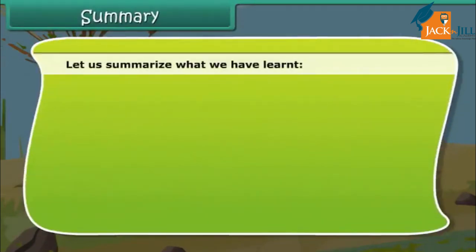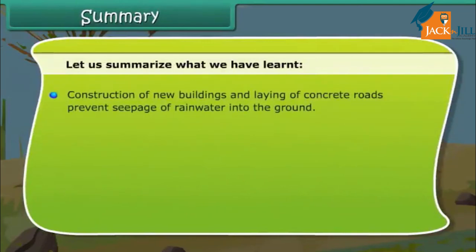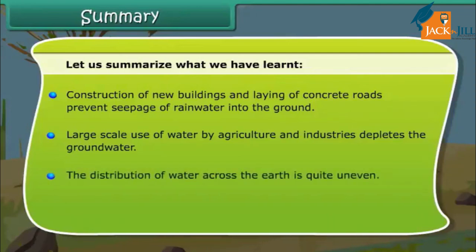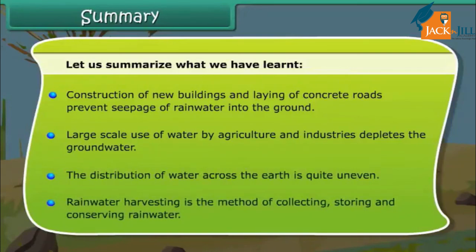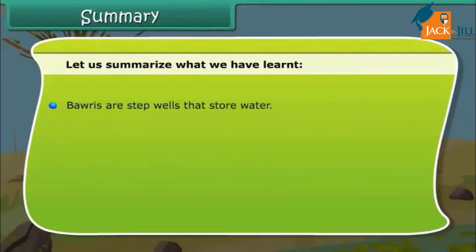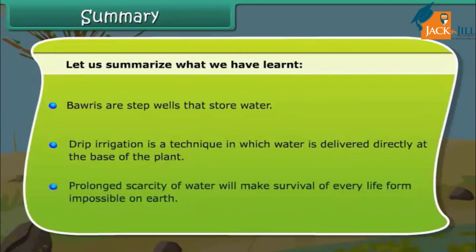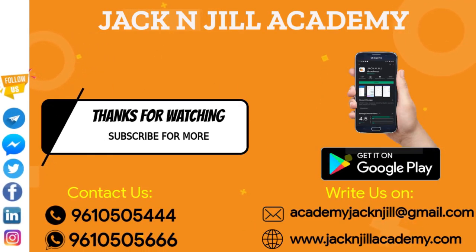Let us summarize what we have learned: Construction of new buildings and laying of concrete roads prevent seepage of rainwater into the ground. Large-scale use of water by agriculture and industries depletes groundwater. The distribution of water across the earth is quite uneven. Rainwater harvesting is the method of collecting, storing, and conserving rainwater. Bawaris are step wells that store water. Drip irrigation is a technique in which water is delivered directly at the base of the plant. Prolonged scarcity of water will make survival of every life form impossible on earth.